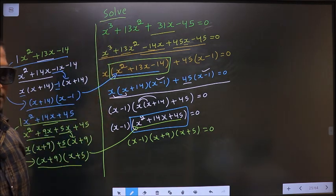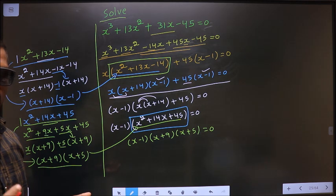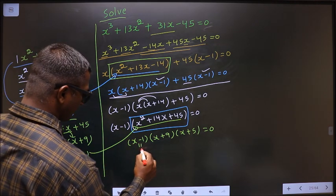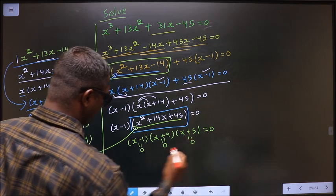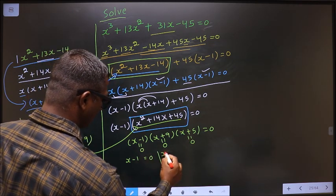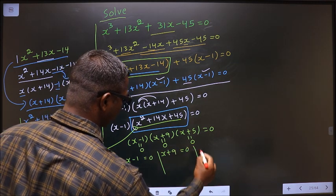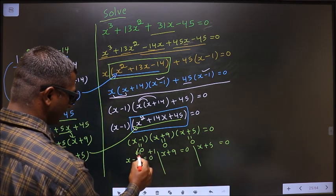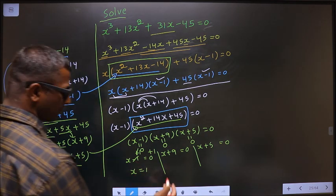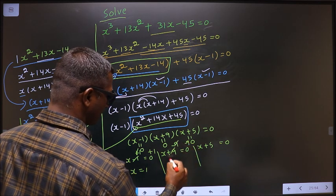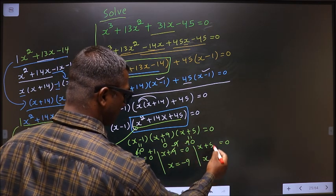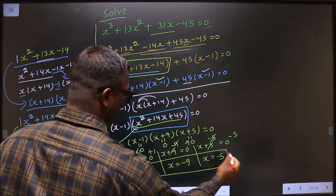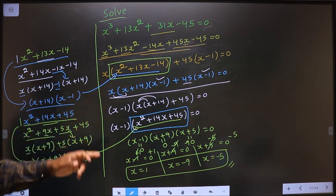They told you to solve. Solve means you need to find the values for x. To get the values for x, equate each bracket to 0. That is x minus 1 equal to 0 — add 1 on both sides, so x equal to 1. For x plus 9, subtract 9 on both sides, so x equal to minus 9. For x plus 5, subtract 5 on both sides, so x equal to minus 5. These are the values for x, and this is our answer.